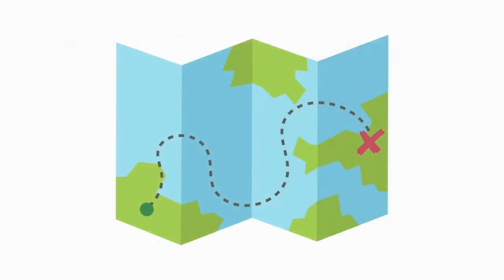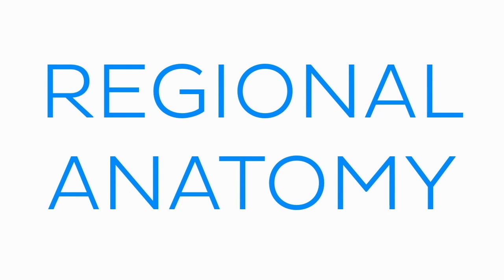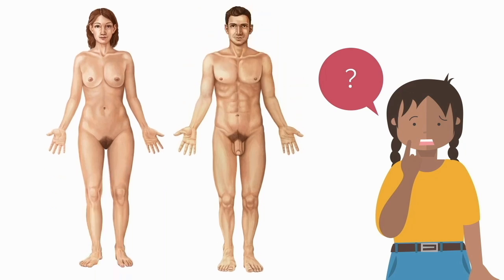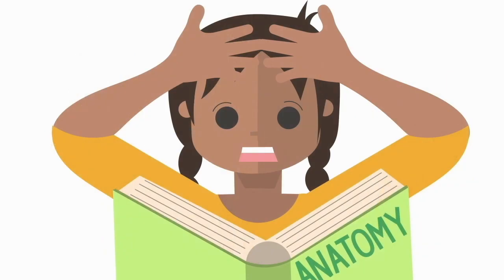Just like a map, a region of the body refers to a certain distinct area. You can think of the body as a country, and the regions of the body as districts. This approach to the study of the human body is called regional anatomy. You might be wondering why we need to split up the body into anatomical regions. This is essentially a way of compartmentalizing the body, so it is easier to learn the overwhelming amount of information available regarding its anatomy.